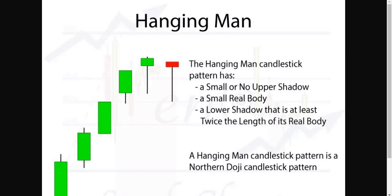Hello, today we're going to talk about the hanging man candlestick. This candlestick has a very small body, very short or absolutely no upper shadow, and a very long lower shadow.